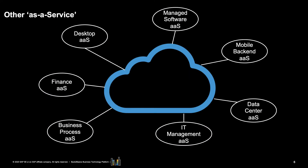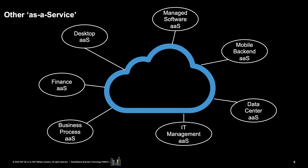IaaS, PaaS, and SaaS — Infrastructure as a Service, Platform as a Service, Software as a Service — are not the only terms used in the as-a-service family. Most specialist areas can be offered as a service, like Desktop as a Service, Managed Software as a Service, Mobile Backend as a Service, Data Center as a Service, Information Technology Management as a Service, Business Process as a Service, Finance as a Service, and many others. The point is that it is all about finding a partner to provide services and defining together how those services can be delivered. It is therefore critical to understand the Service Level Agreement, or SLA, associated with the service.